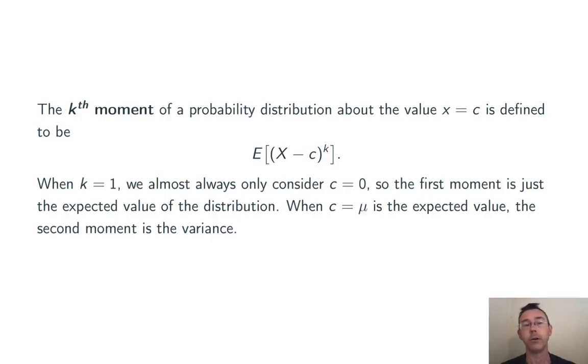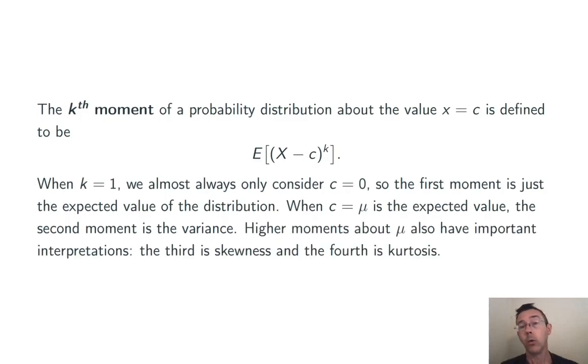The expected value of (x minus μ) quantity squared. When k equals 3 we get skewness and when k equals 4 we have kurtosis. So the kth moment of a probability distribution is potentially interesting to us for different values of k.